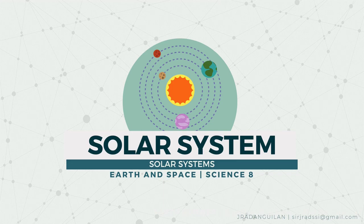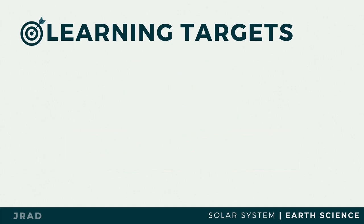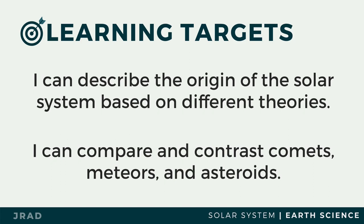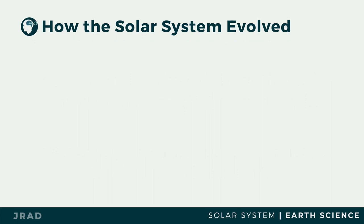The solar system refers to the Sun itself and every celestial object that revolves around it. It includes the eight planets and their natural satellites, dwarf planets, and small solar system bodies. In this video lesson, we will describe the origin of the solar system based on different theories, and discuss the small solar system bodies by comparing comets, meteors, and asteroids.